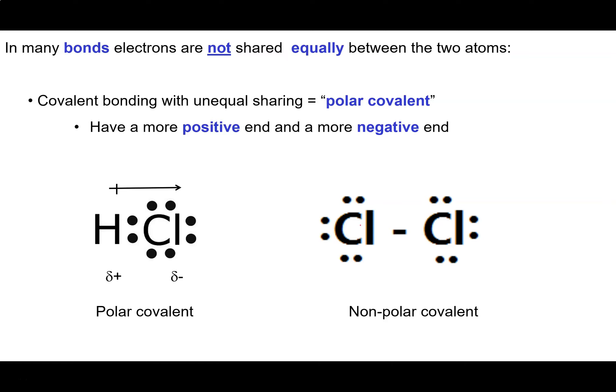So in many covalent bonds, the electrons are not shared equally. When we have a covalent bond where we have an equal sharing of electrons, this is referred to as a polar covalent bond.